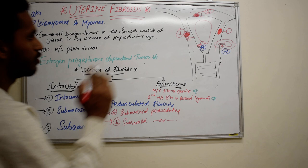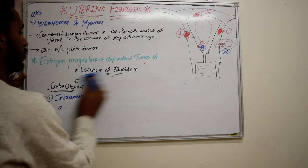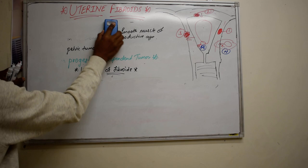So that was the basic about fibroids — their types and locations. Now we will discuss the epidemiology and symptoms, and after that, how to treat fibroids.